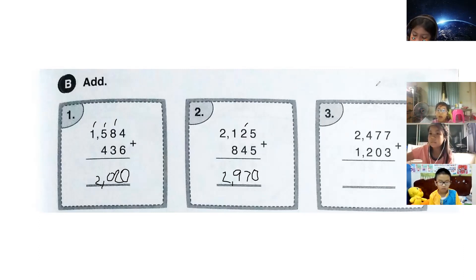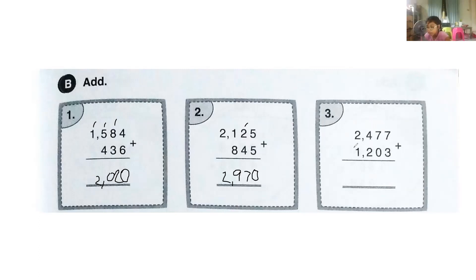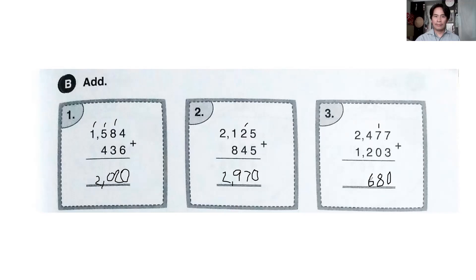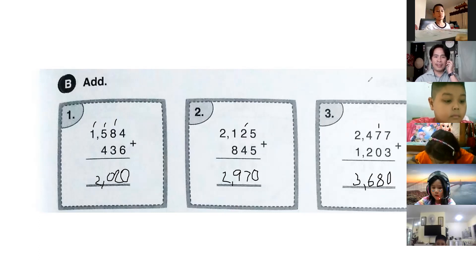Number three — I want to choose Tenkwa. Seven plus three equals ten, carry one. Seven plus zero plus one equals eight. Four plus two equals six. Two plus one equals three. The sum is three thousand, six hundred and eighty — 3,680. Very good! Next, number four.